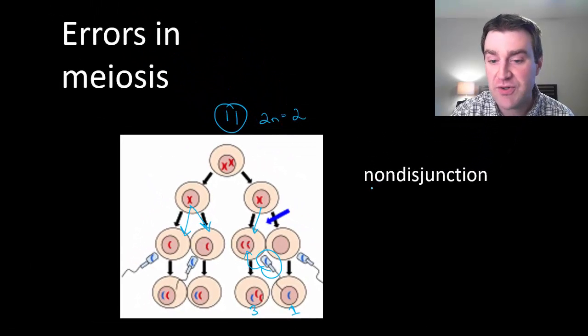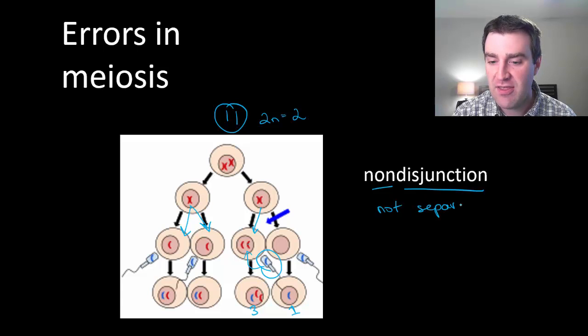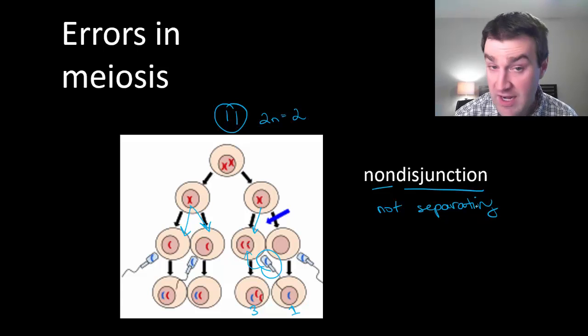In either case we call this error during meiosis nondisjunction. We are not separating the chromosomes correctly and we're ending up with cells that have too many chromosomes or too few.